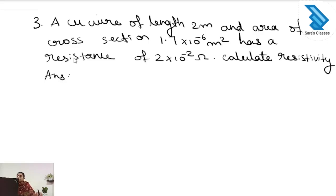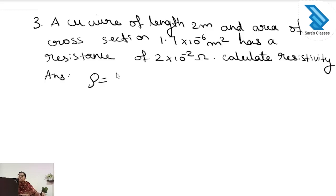Third question: a copper wire of length 2 meter and area of cross section 1.7 × 10⁻⁶ m² has a resistance of 2 × 10⁻² ohm. Calculate the resistivity. The equation for resistivity is rho is equal to R times A divided by L, where R is resistance, A is area of cross section, and L is the length.